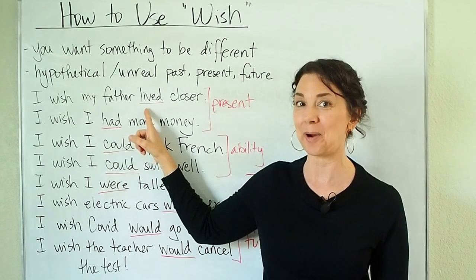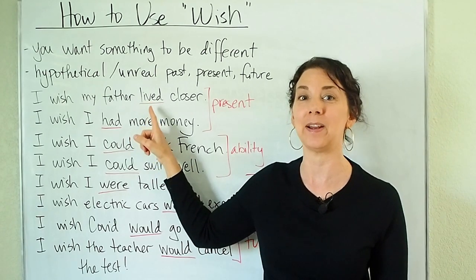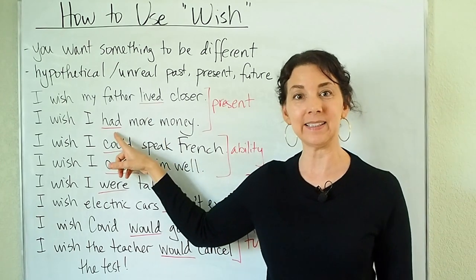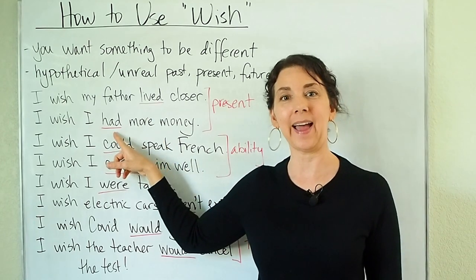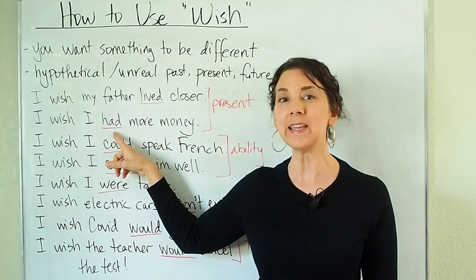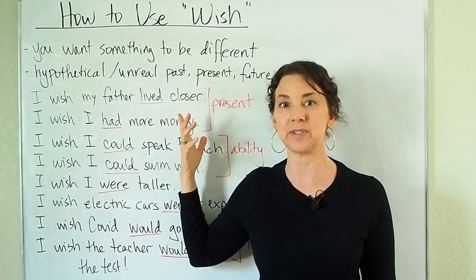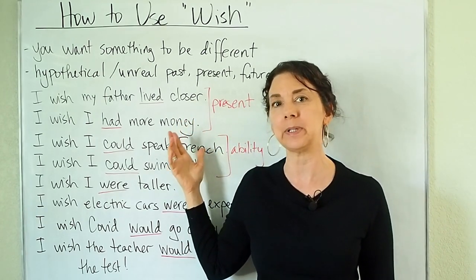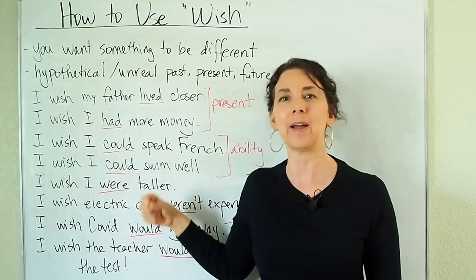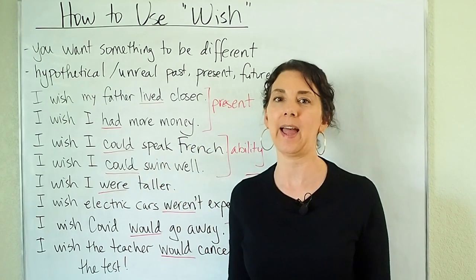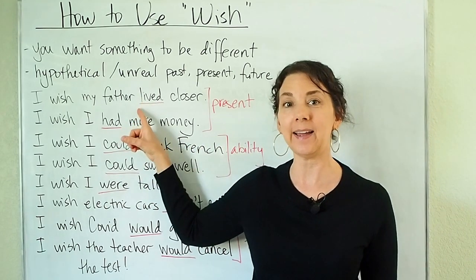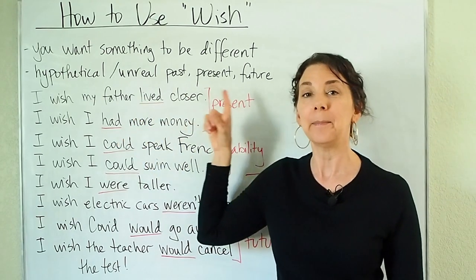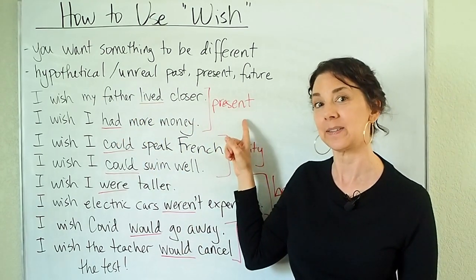Think about the conditional grammar that you know — you probably know this type of grammar already. I wish I had more money. So again, I'm thinking about a situation that I wish were different. It cannot happen or it probably will not happen. I wish I had more money. Again, had here is in the past tense to show that conditional, but we're actually talking about the present.